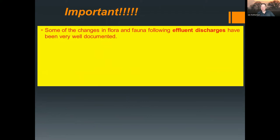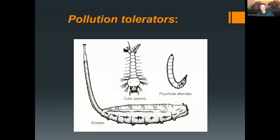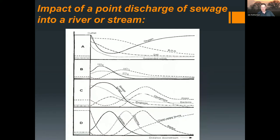Some of the changes in flora and fauna following effluent discharges have been very well documented, so it's worth reading up on these in the provided notes. Try to consider indicators from different taxonomic groups and different pollutants — not just relying on one or two things, but looking at different types of indicators to give a more robust assessment. Pollution tolerators include rat-tail maggots that send up telescopic breathing tubes so they can sit in an organic soup with low oxygen, hanging by the meniscus at the surface.